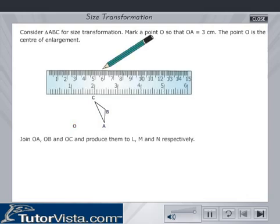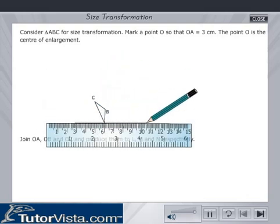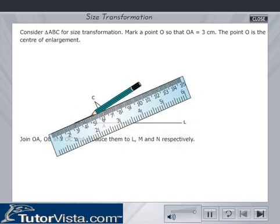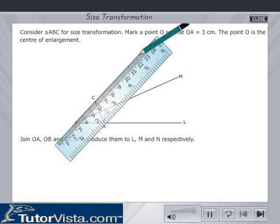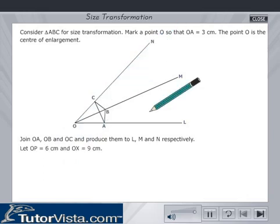Join OA, OB and OC and produce them to L, M and N respectively. Let OB is equal to 6 cm and OX is equal to 9 cm.